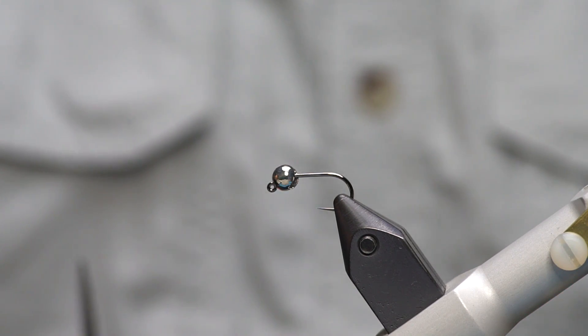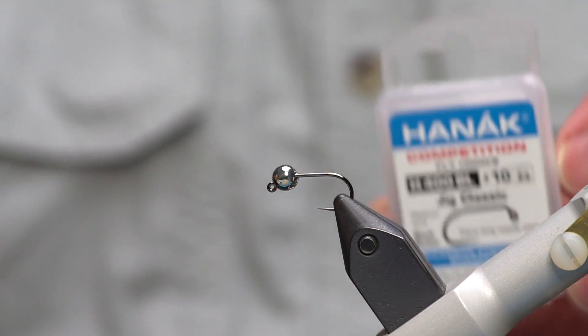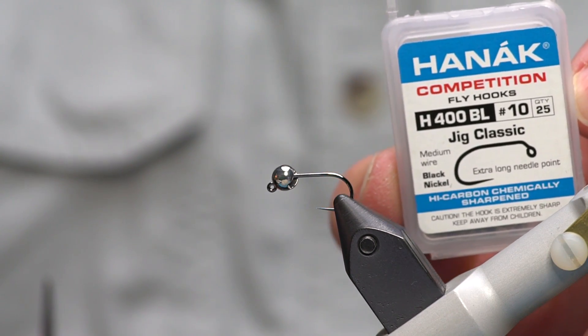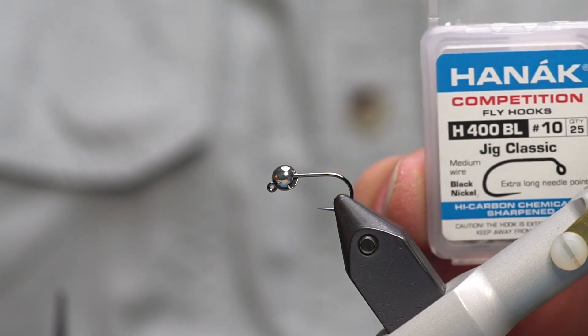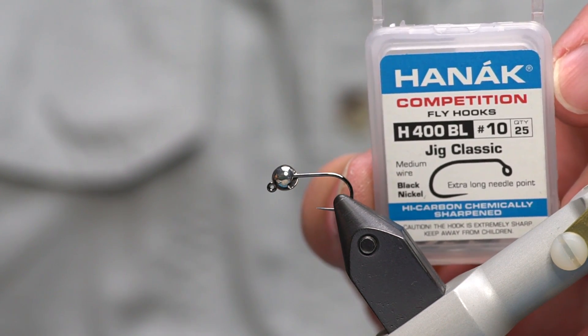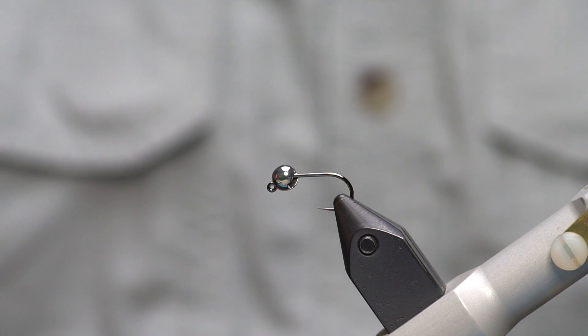I've started with a hook in the vise and a bead on the hook. I've got a Hanak Competition 400 which is my favorite jig style hook for most situations. This particular one's a size 10. I tie them as small as 12s and as big as eights but most of the time I'm using them in about a size 10.